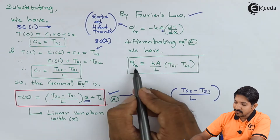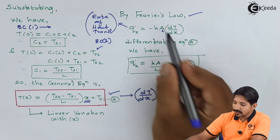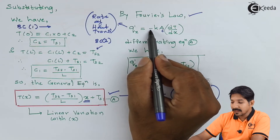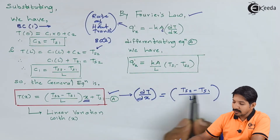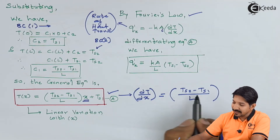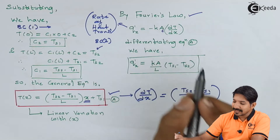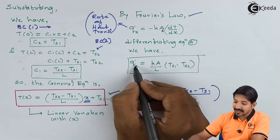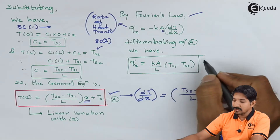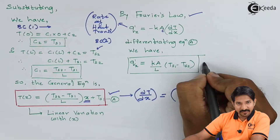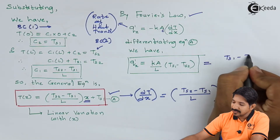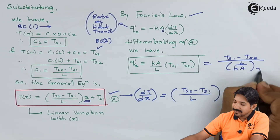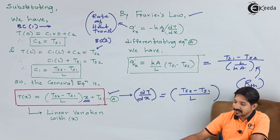Then Q(x) = K·A·(Ts2 − Ts1) / L. To compensate the negative sign, I swap the temperatures and write this as Q(x) = K·A·(Ts1 − Ts2) / L, which can also be written as Q(x) = (Ts1 − Ts2) / (L / K·A). Now L/(K·A) is nothing but the thermal resistance in case of conduction.